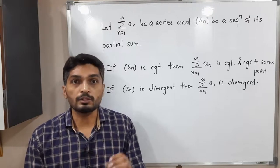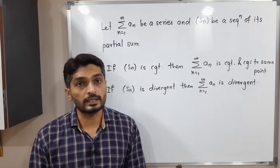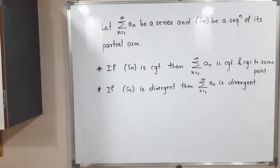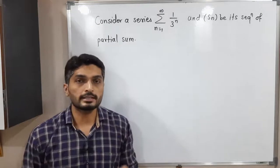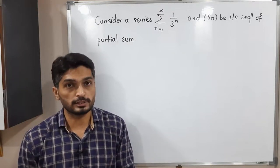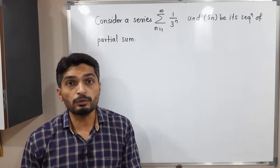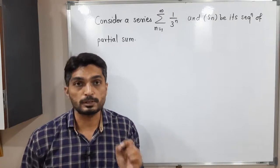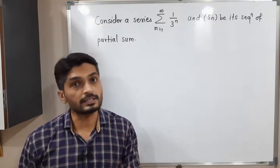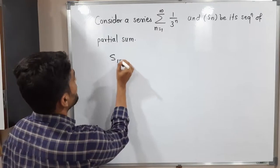Let us discuss one example so you can easily understand the meaning. I am considering the series summation 1 upon 3 raised to n, and let Sn be the sequence of its partial sums. We are going to check whether this series is convergent or divergent by finding the sequence of partial sums and checking whether it is convergent or divergent.